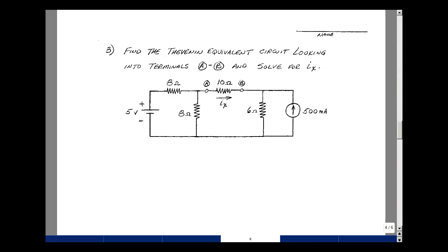For problem number three, could you thevenize this circuit with respect to terminals A and B? In other words, could you replace all of this by a Thevenin equivalent circuit, and solve for the current I sub X using your Thevenin equivalent circuit?